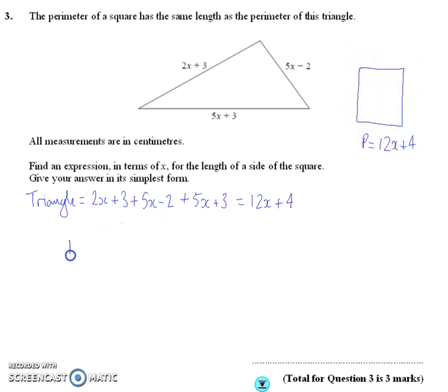then I'm going to take the 12x plus 4, and I'm going to divide it by 4, because there's 4 sides. So 12x divided by 4 is 3x, 4 divided by 4 is plus 1.